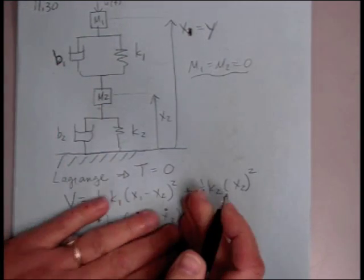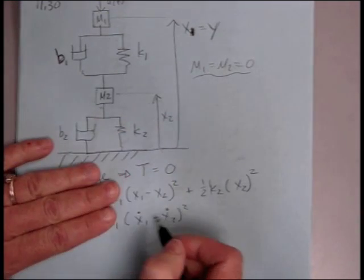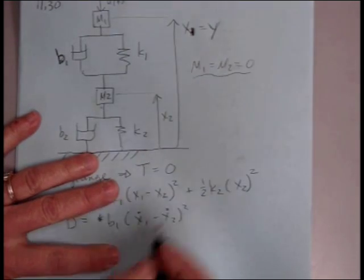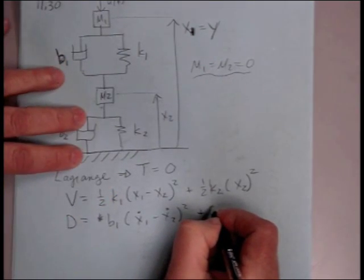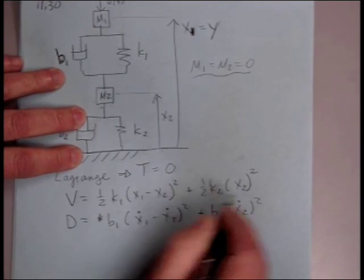Because the derivative is linear, the derivative of x1 minus x2 is x1 dot minus x2 dot, and then we have to square the whole thing. And then also for our second damper, b2, x2 dot squared.